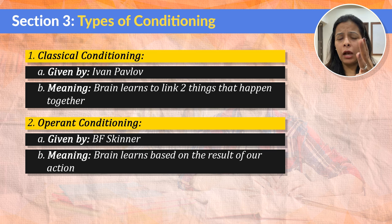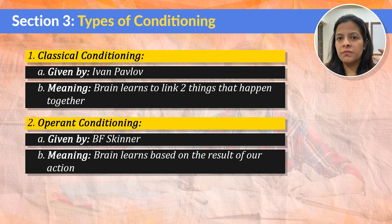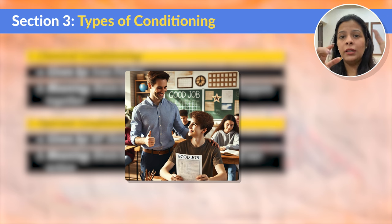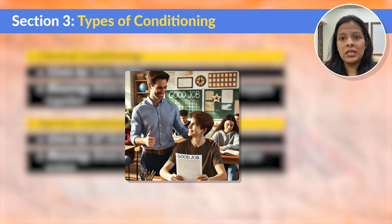Operant Conditioning was given by B.F. Skinner. In operant conditioning, our brain learns based on the result of our actions. The brain starts learning new behavior when it sees the result of a particular action. For example, every time a student completes his homework on time, he hears 'Good job' or 'Well done' from his teacher. Over time, the student starts associating completing homework — the behavior — with receiving praise — the result. He will associate that every time he does his homework, he will be praised. This is called positive reinforcement in operant conditioning. Since the student likes getting praise from the teacher, he is more likely to complete his homework on time.